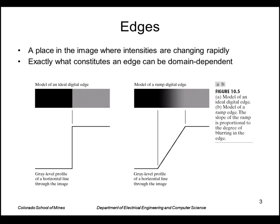For example, here we have a step edge which rises abruptly. Here we have a ramp edge which rises gradually, and this could also model a blurring of a step edge.